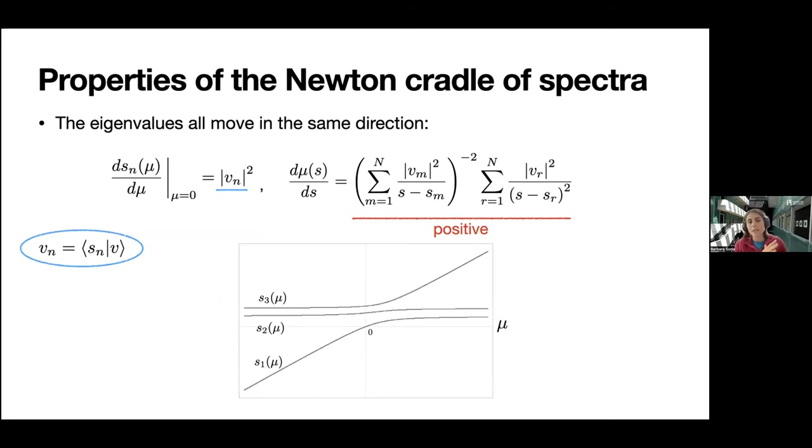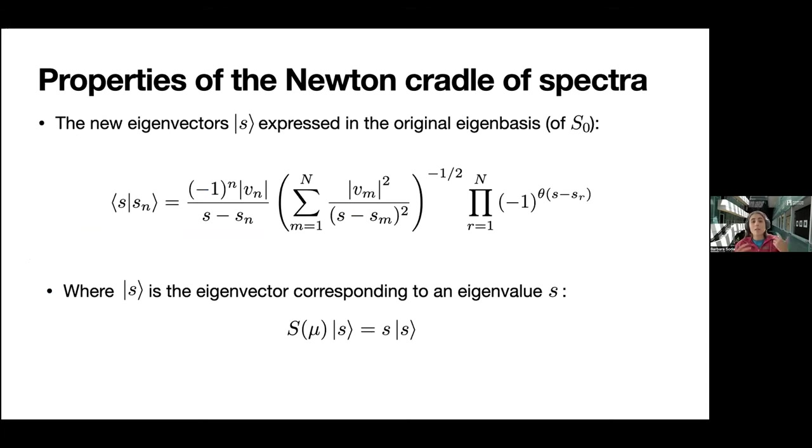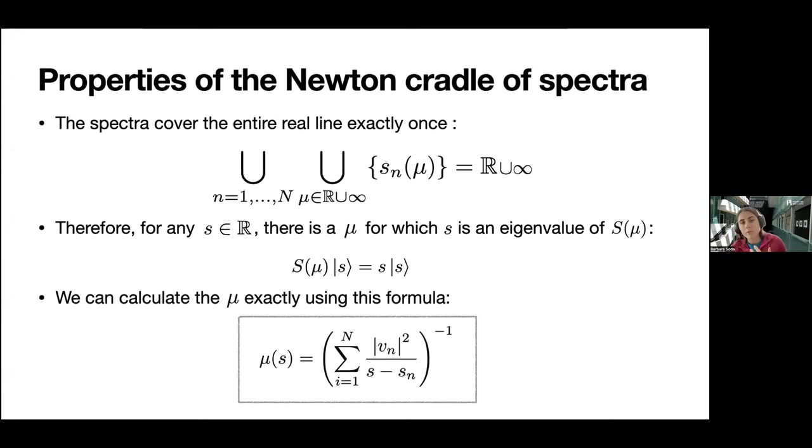I emphasized in the beginning that this is a non-perturbative result, so we have all these formulas that are exact for all values of the coupling constant μ. We can rigorously prove some things such as that the eigenvalues all move in the same direction, and there are formulas that support that. They don't always move at the same speed, but they always all move in the same direction, which is important for some applications. Another thing is that we can express the new eigenvectors when we add the interaction Hamiltonian |v⟩⟨v| in terms of the old eigenvectors sₙ. This is the formula which connects the old to the new eigenvectors.